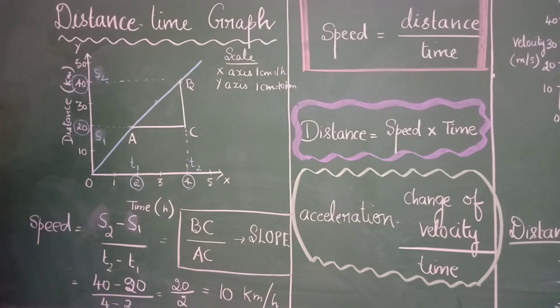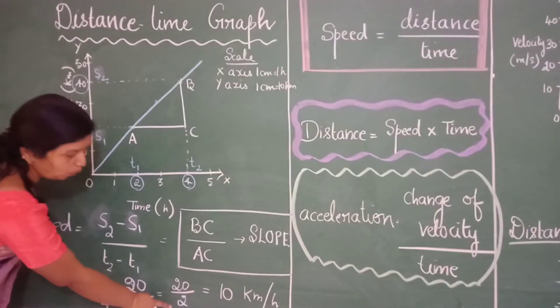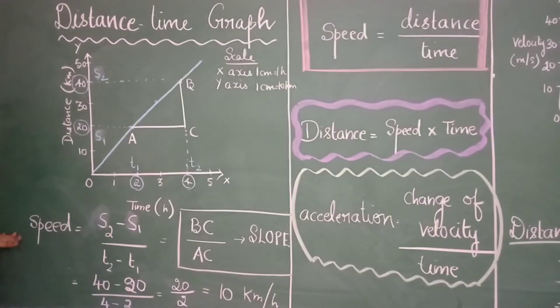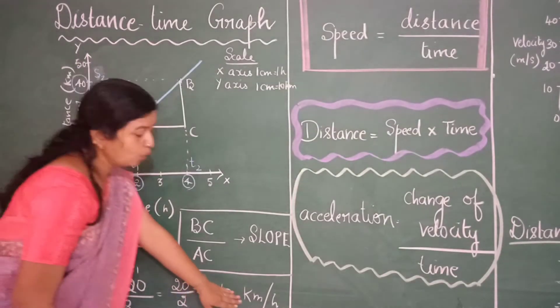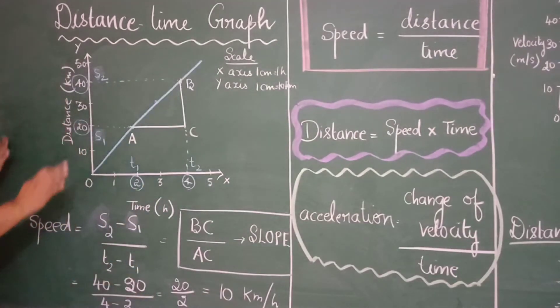So substituting the values we get this 40 minus 20 by 4 minus 2. So you will get it as 20 by 2 and if you again simplify it you will get it as 10 and since we are calculating the speed the unit here is kilometer per hour. So in case you are given a graph with all the values and you are asked to calculate the speed then you are going to use this formula.